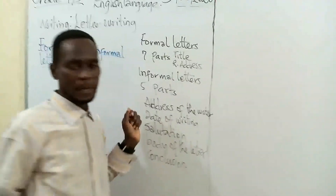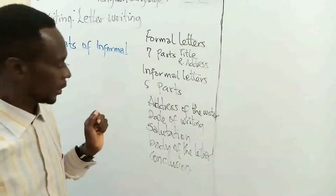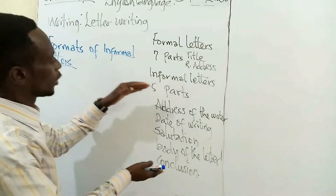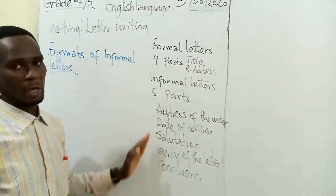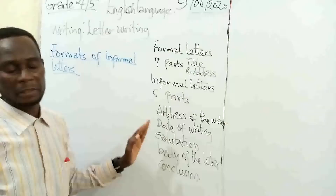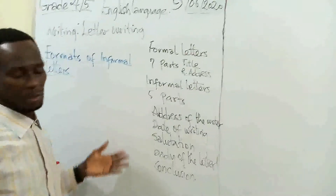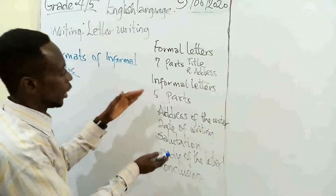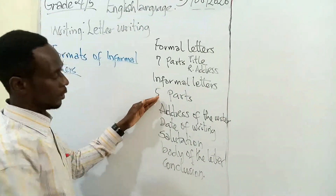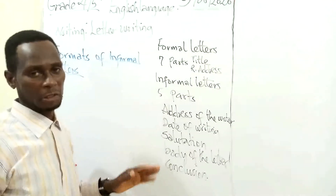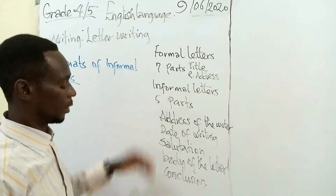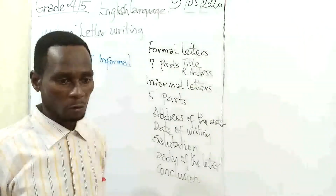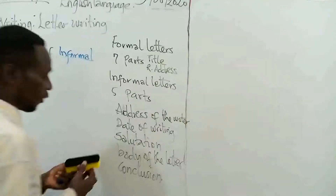How do we format this part? How do we format these five parts? You don't write it anyhow, because it is a letter. Each of these five parts has their position in letter writing — in any informal letter, they have their position. Let me quickly delete that so that we can start formatting.